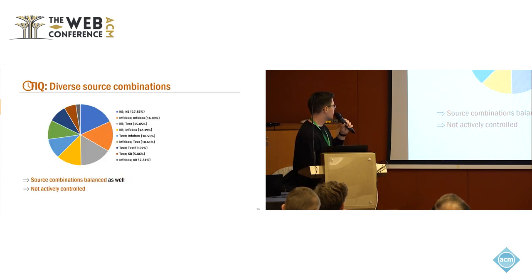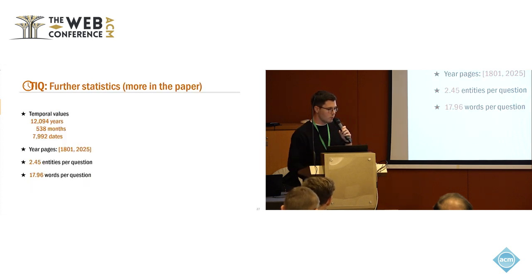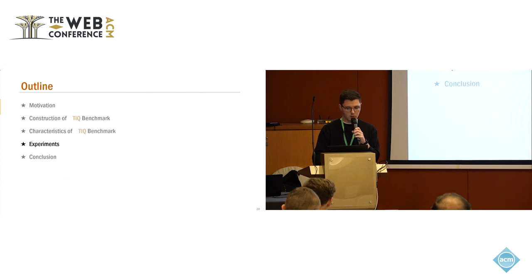Further, we also analyzed the source combinations that went into the questions. We instantiate the two parts from different sources, and we found that in general this is quite balanced. So we did not control this at all, and we found that there was not one single information source that was overrepresented, and also not a combination of information sources that was overrepresented. Finally, we have 1,200 years present in our questions, 500 months, and roughly 8,000 dates. We started from the year pages 1800, going quite a while back to 2025. We have 2.45 entities per question and roughly 18 words per question. So questions can also get a bit longer sometimes. More details also in the paper if you are interested in that.